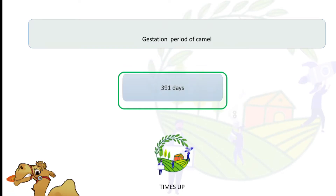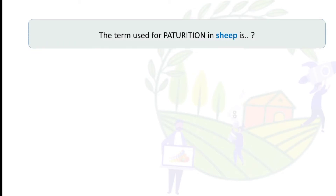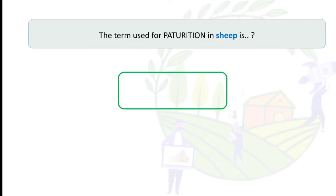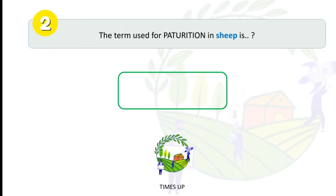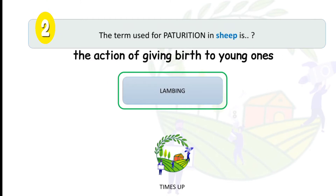The gestation period in camel is 391 days.